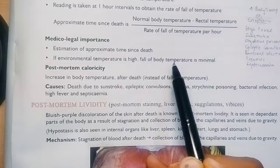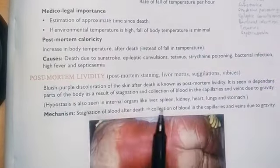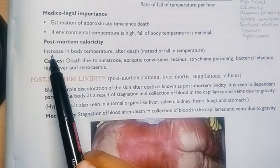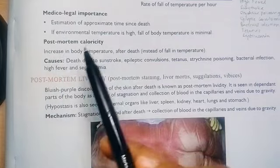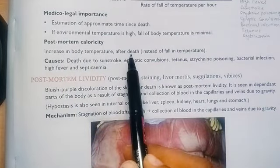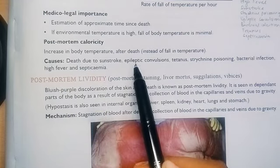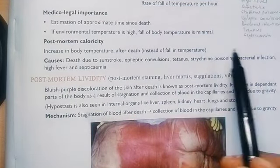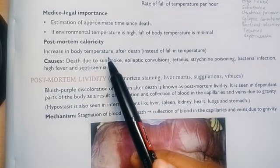Then one more topic is post-mortem caloricity. In algor mortis the body temperature decreases, but here the body temperature increases after death instead of falling. Causes: death due to sunstroke, epileptic convulsions, tetanus, strychnine poisoning, bacterial infection, high fever, and septicemia. These are the causes where the body temperature increases after death rather than decreasing.